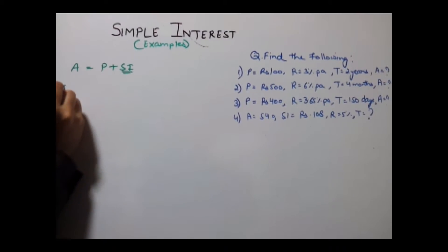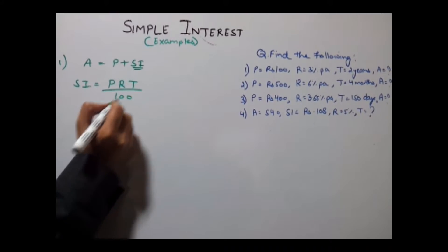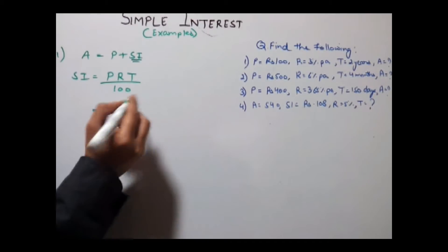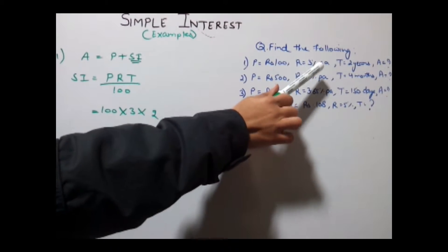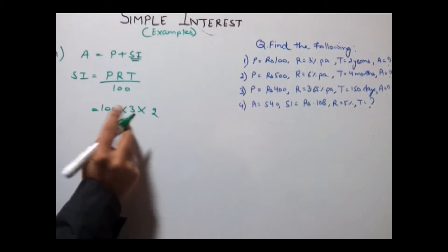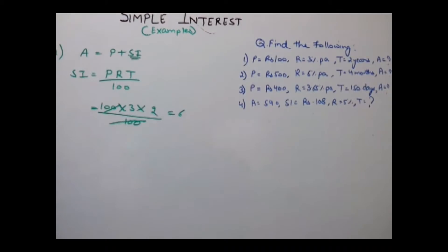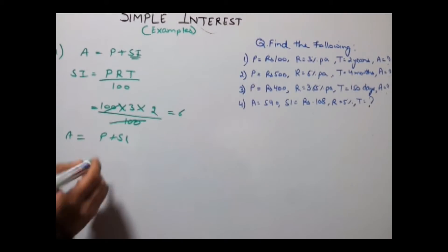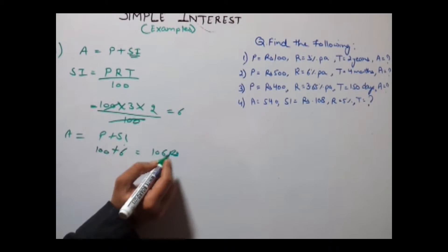So simple interest would be calculated using the formula P × R × T divided by 100, which gives us 100 × 3 × 2 divided by 100. Note that rate is given per annum so time must be compatible. Cancel 100 from 100, which gives us 6. Now amount equals principal plus SI: principal is 100 and SI is 6, which gives us amount as 106 rupees.